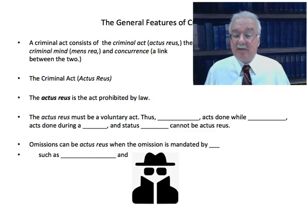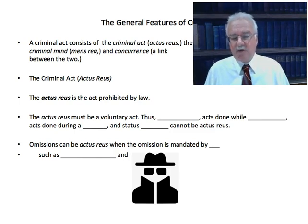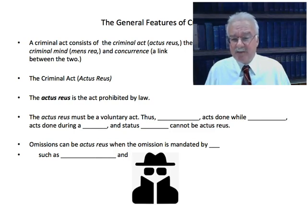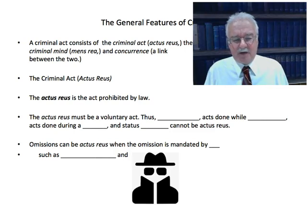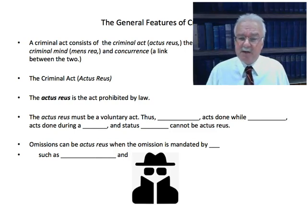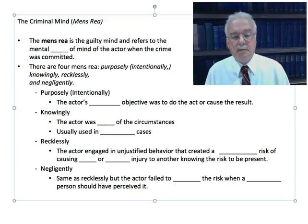Actus reus has to be a voluntary act. Omissions can be actus reus when the omission is mandated by law. For example, failing to file your income taxes is not doing an act — it's failing to do an act — but the law says that can be a legal actus reus. Examples of omission actus reus include not filing your income tax, or if you're a parent, not caring for your children by giving them food or medical care.